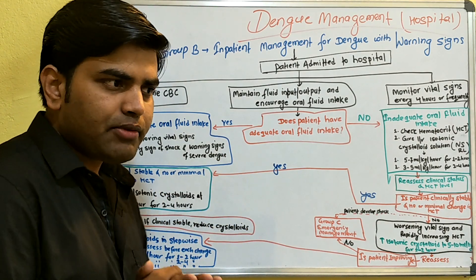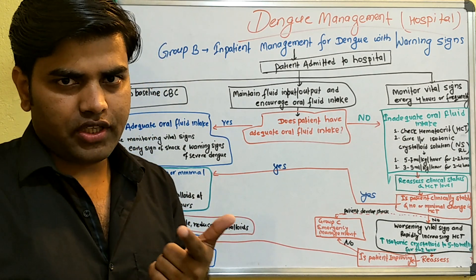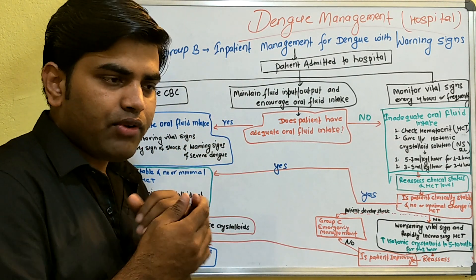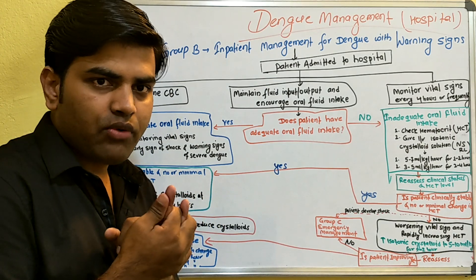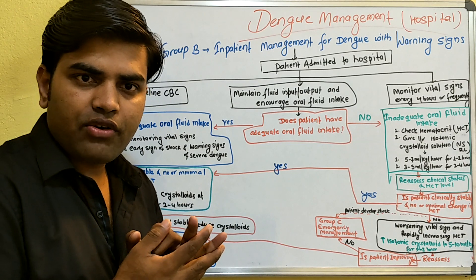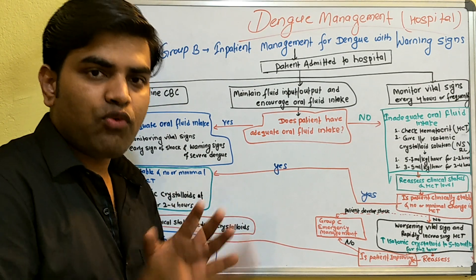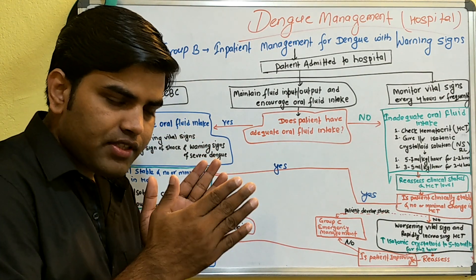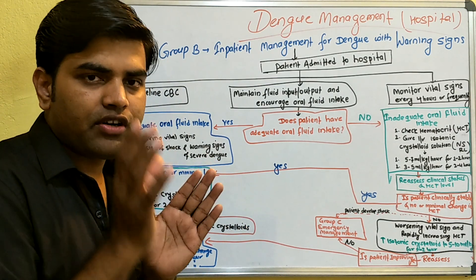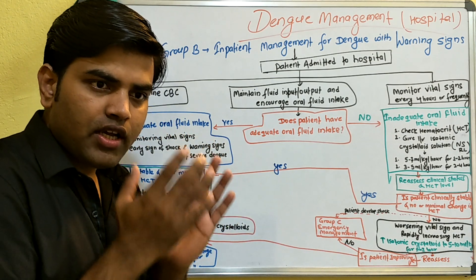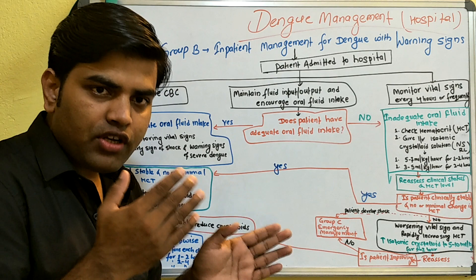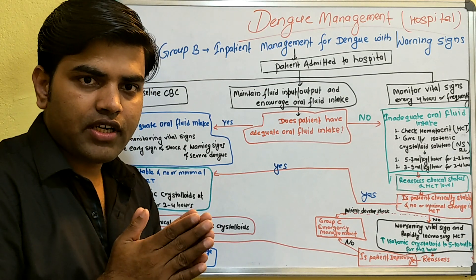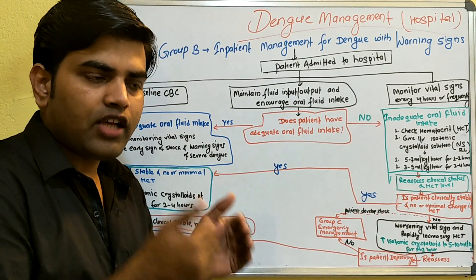The outpatient management involves several things. You have to follow the CBC, check whether the platelet count is decreasing, and whether hematocrit is increasing. You also monitor for signs of dehydration and warning signs. It is very important to follow the phase — once the febrile phase is gone, the critical phase begins. That 24 to 48 hours is very critical; any complication can arise during that stage.